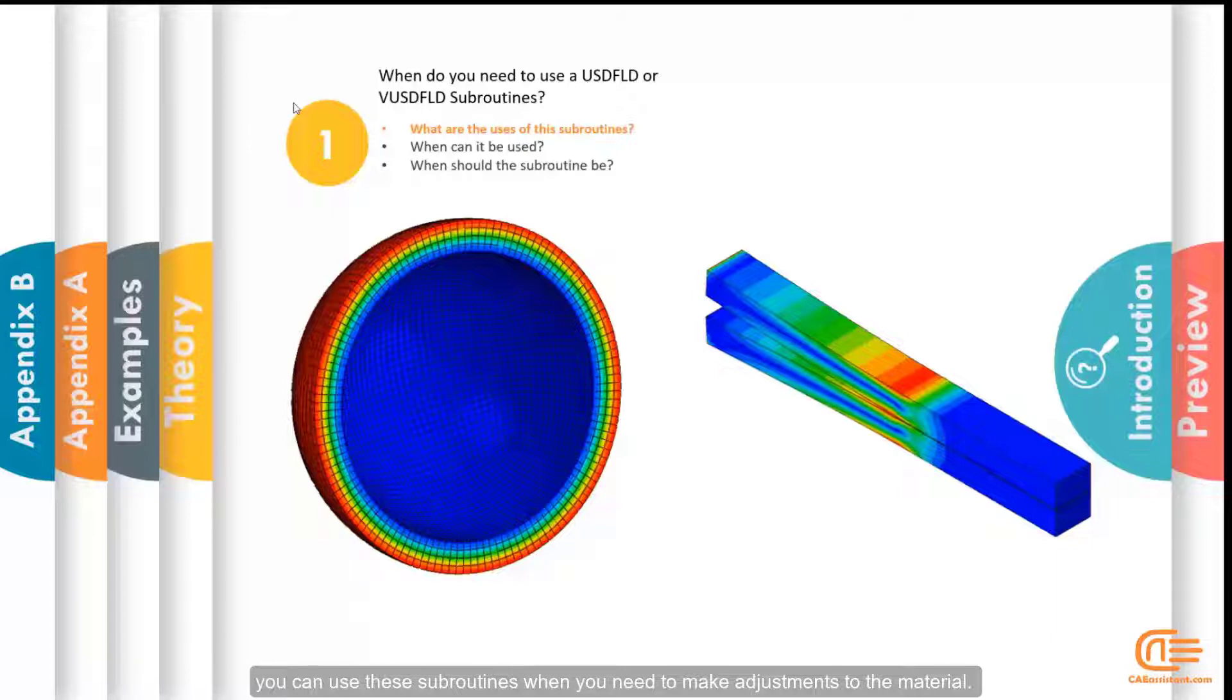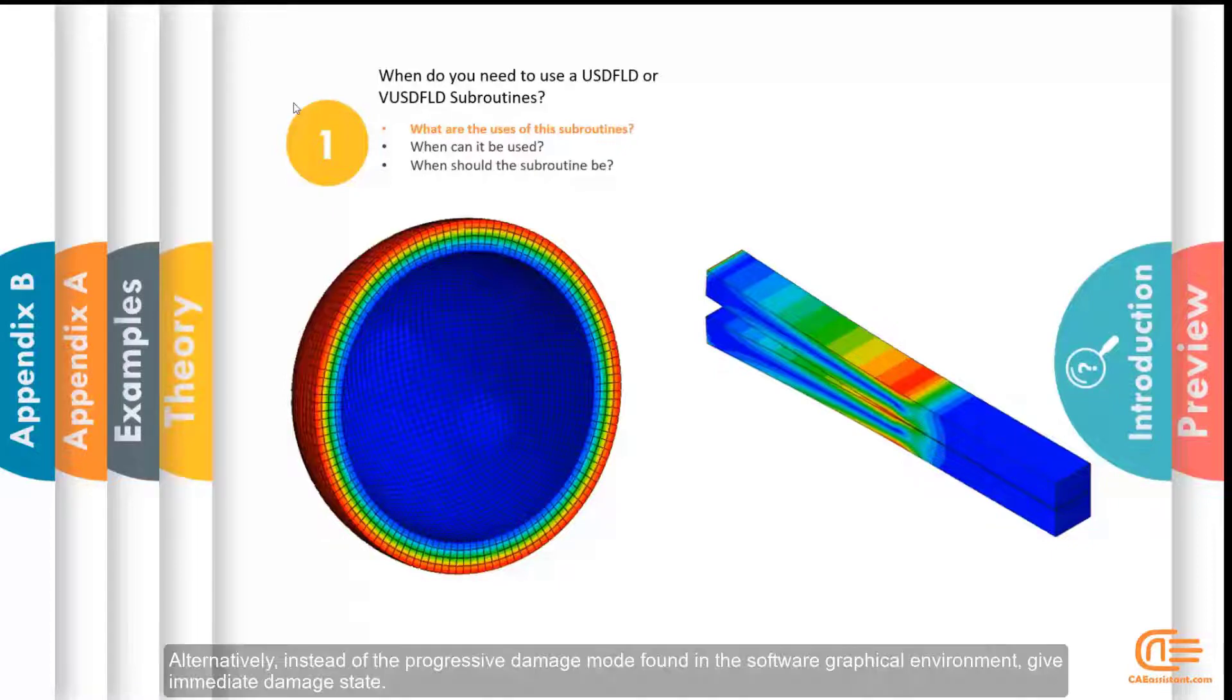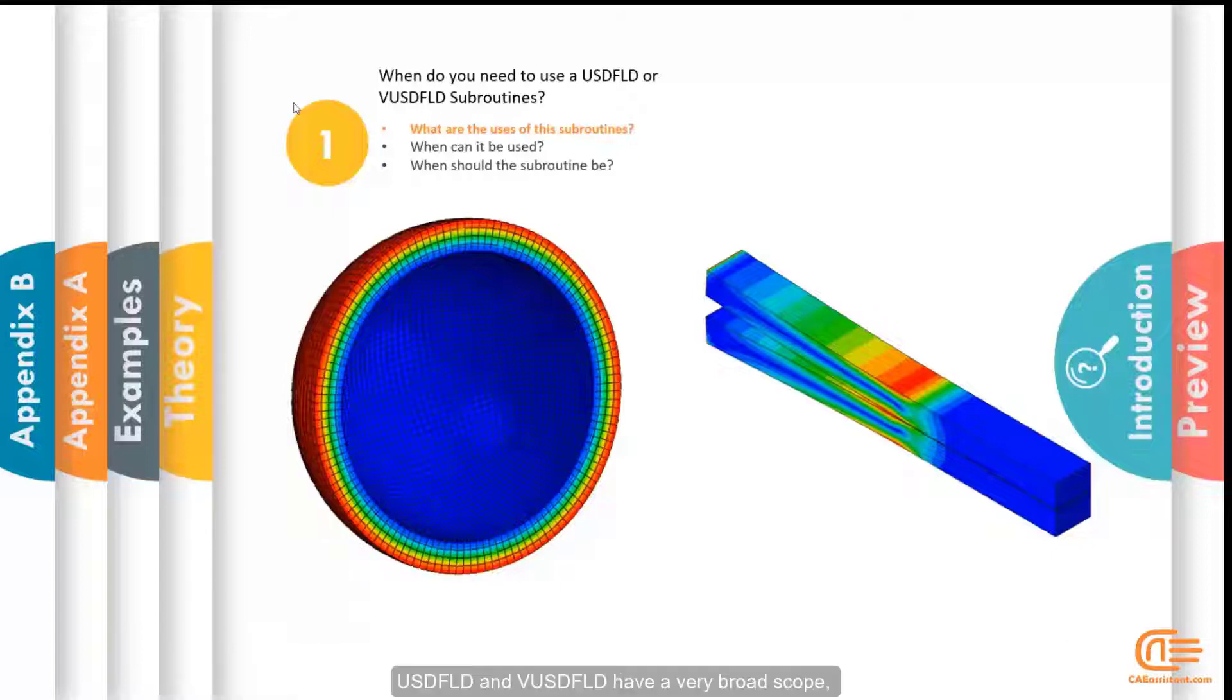Assume your elastic modulus in a sphere changes as the radius changes. You can use these subroutines to do so or you can make cohesive damage dependent on another variable in addition to the variables provided in the software graphical interface. Alternatively, instead of the progressive damage mode found in the software graphical environment, give immediate damage state.